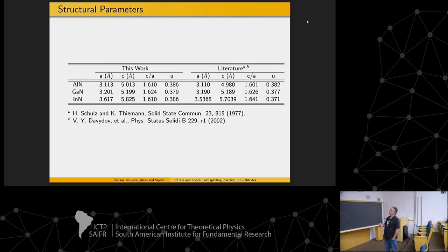In wurtzite we have three important parameters. We have A on the plane, C on the spectral direction. And in wurtzite you have, actually in the atomic cell, two atoms of each material, and then we have this third parameter, that's the U, that gives the difference, the distance among one species and the other, the closest one.